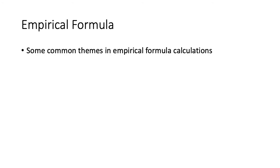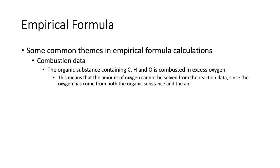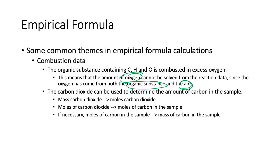Some common themes in Year 12 empirical formula calculations: they'll generally give you combustion data with C, H, and O — and sometimes N. The amount of oxygen cannot be solved directly from the reaction data because oxygen also comes from the air. So the CO₂ and H₂O produced contain oxygen from both the air and the organic substance, meaning you can't use it to determine how much oxygen was only in the organic substance. Generally, we use the carbon dioxide formed to work out the amount of carbon: mass of CO₂ gives moles of CO₂, which gives moles of C.